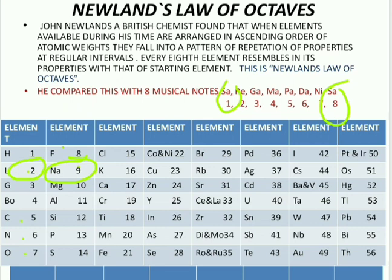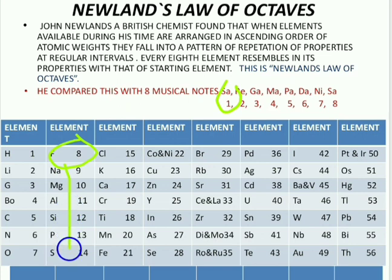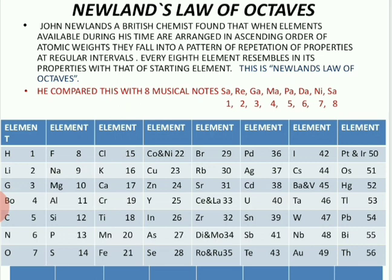Starting from Fluorine: the first element is Fluorine, second is Sodium, third is Magnesium, fourth is Aluminium, fifth is Silicon, sixth is Phosphorus, seventh is Sulphur, and the eighth element is Chlorine. Fluorine and Chlorine both have similar properties. In this way, elements show similarities in properties in a regular pattern at regular intervals. Newlands arranged all 56 available elements into seven groups.